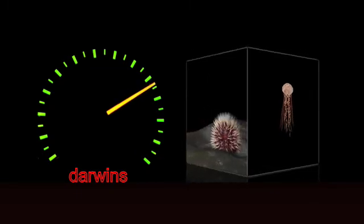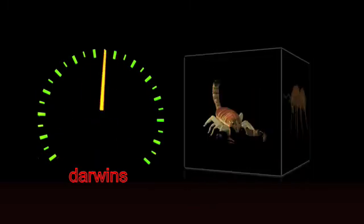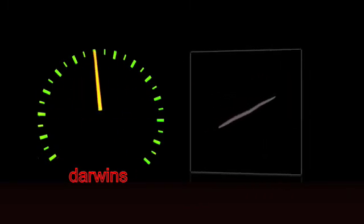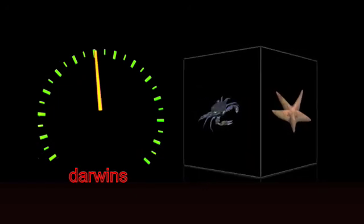Observed rates of evolution in lab experiments are even more impressive, averaging 60,000 Darwins, and as high as 200,000 Darwins, or over 6,000 times the required rate.